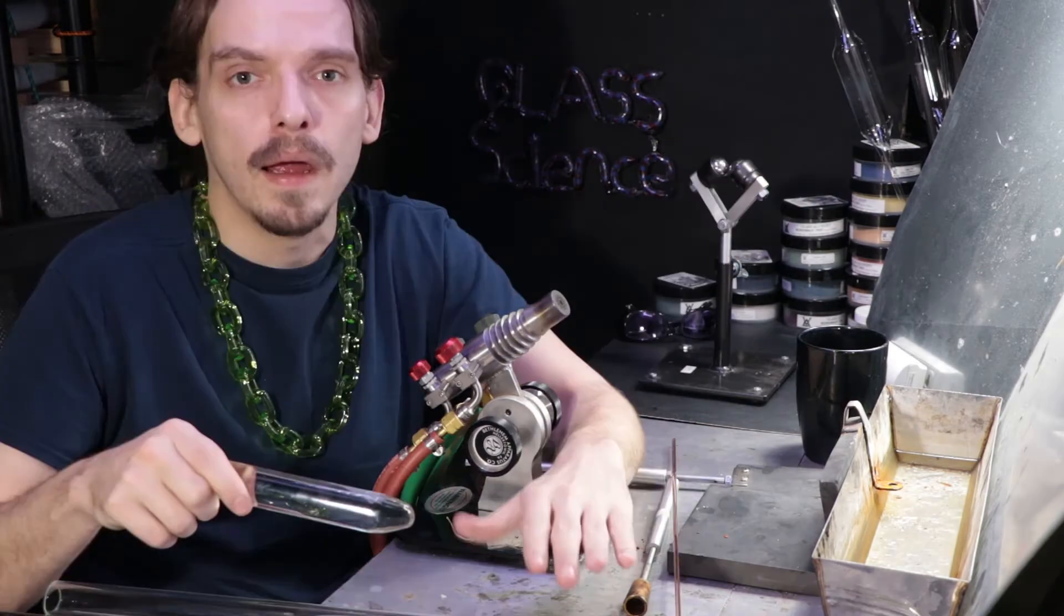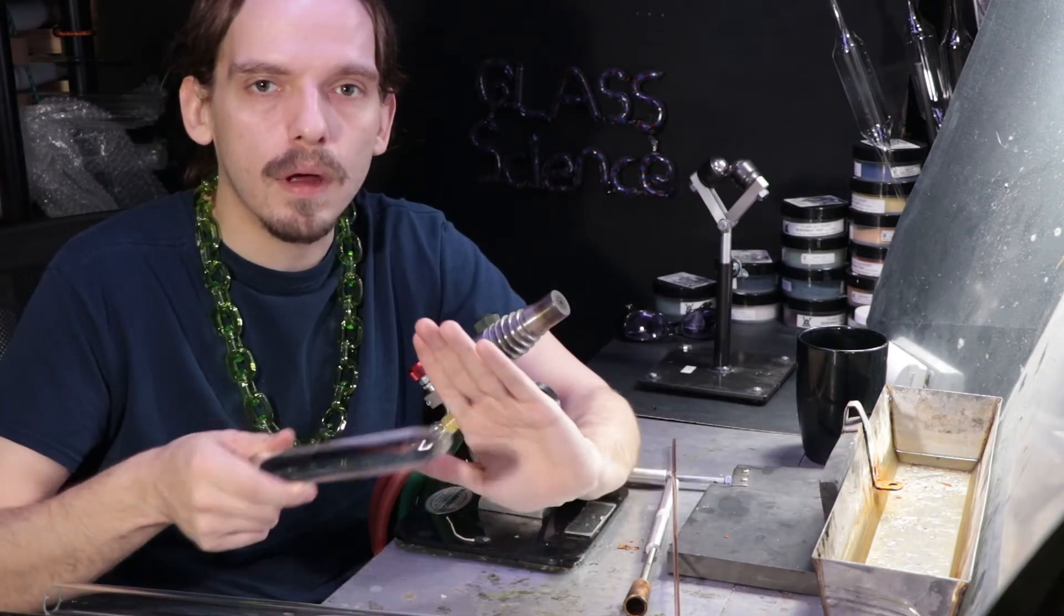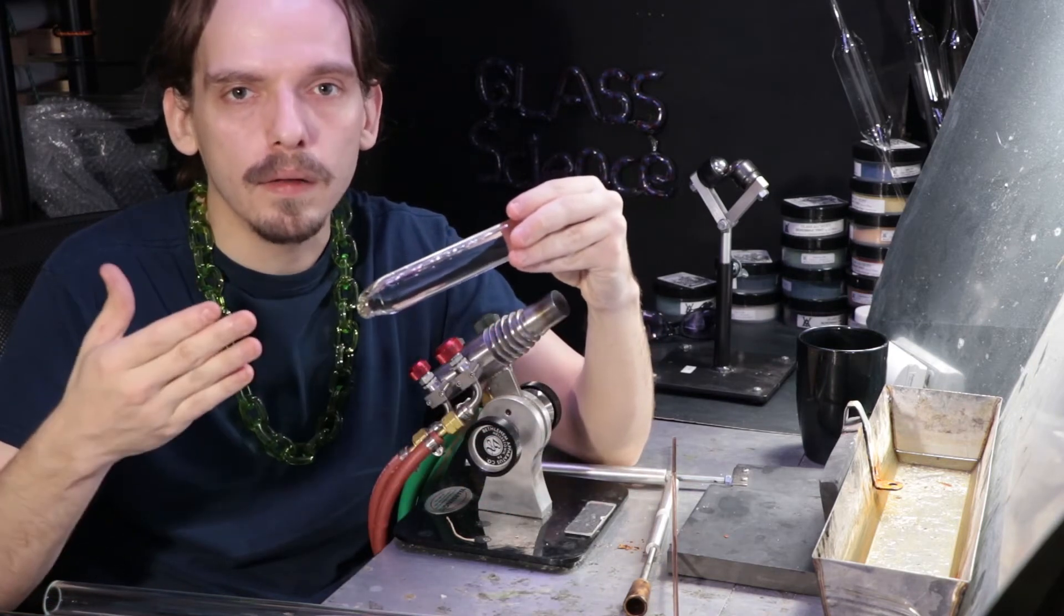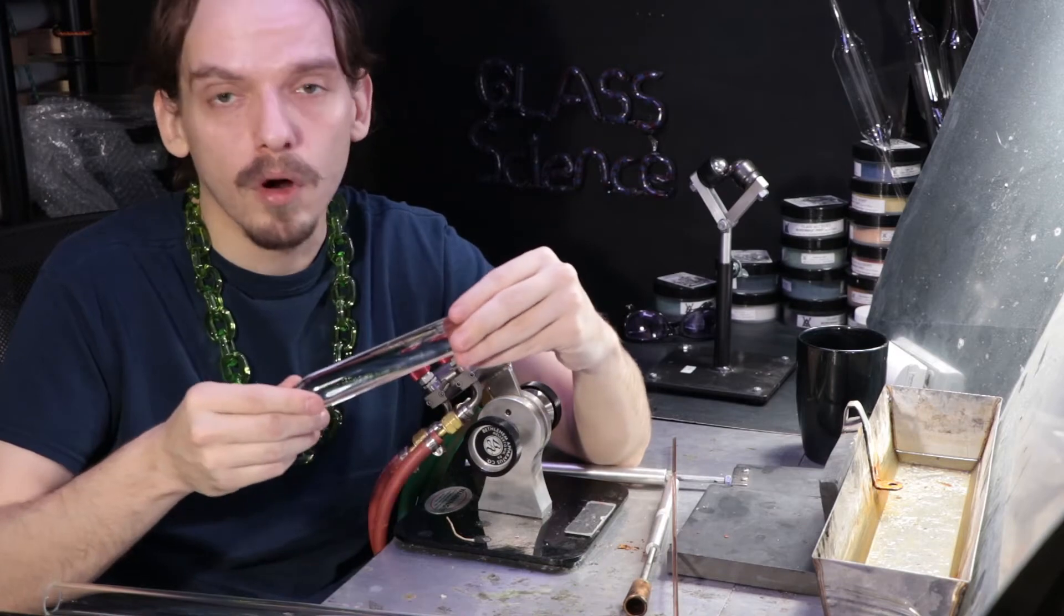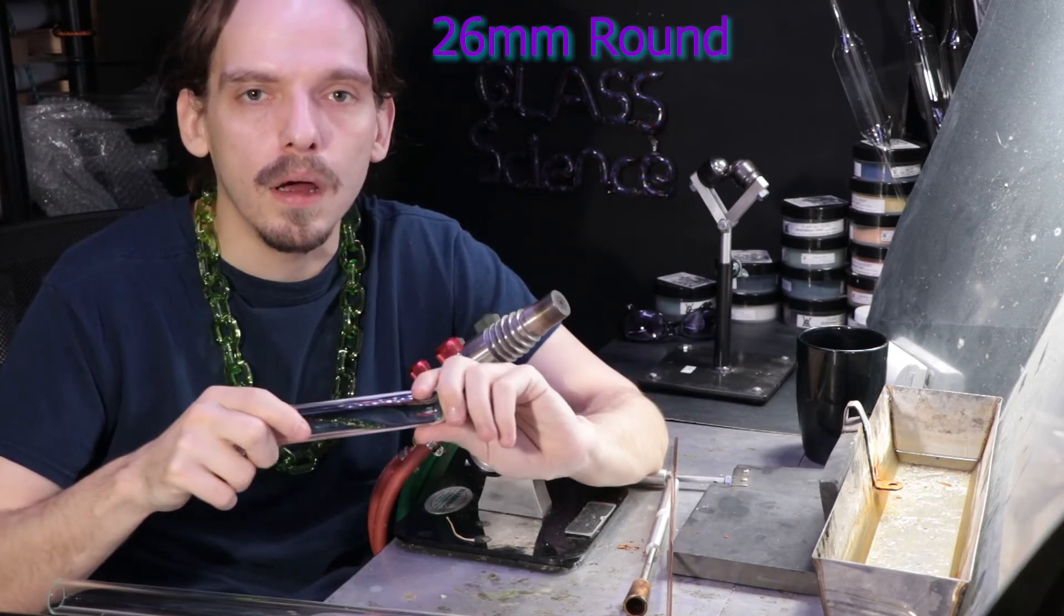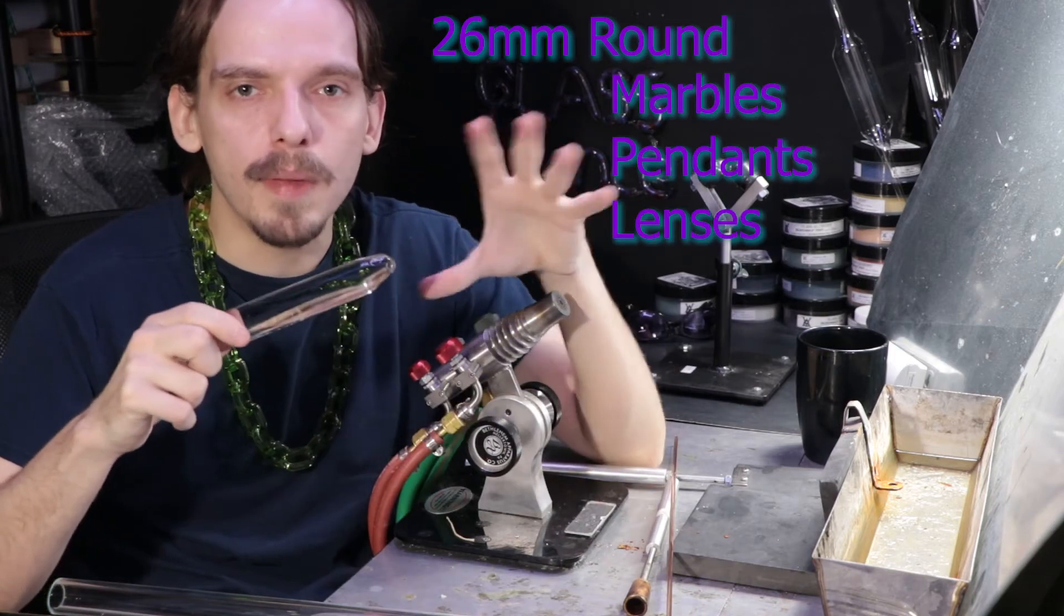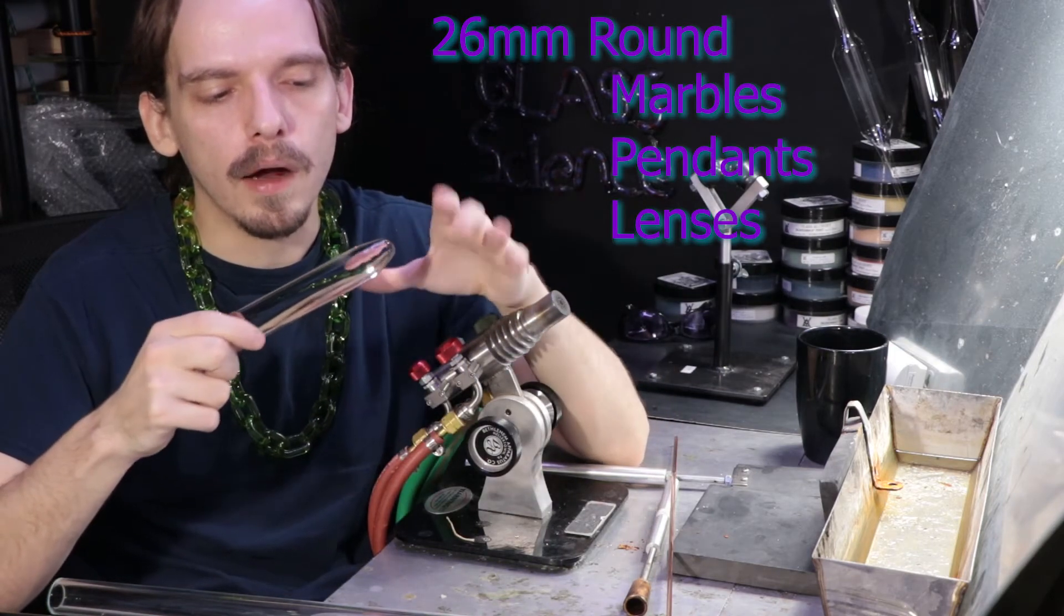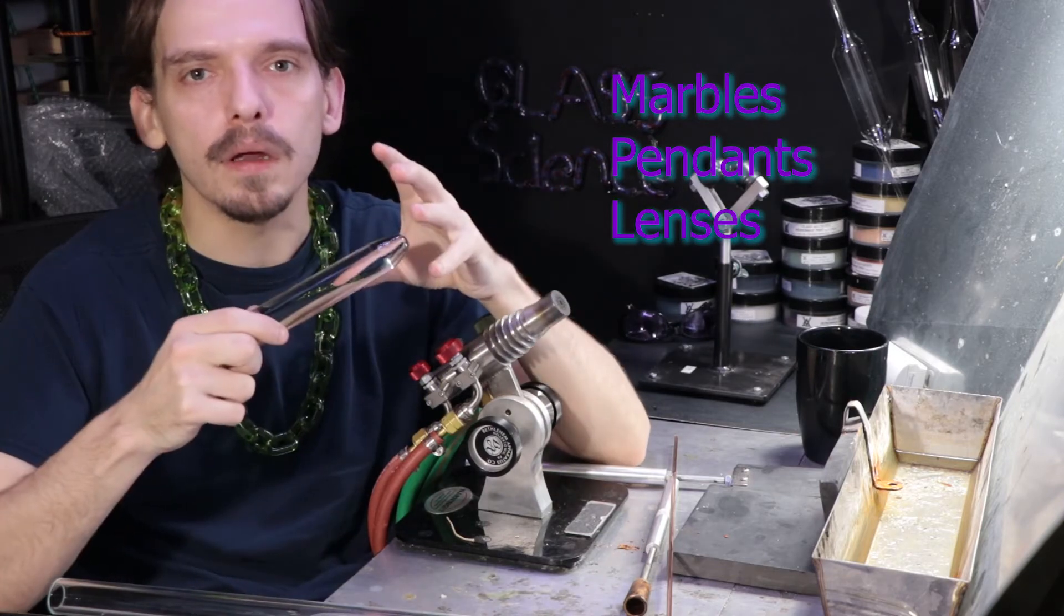And then for a lot of my projects that require a lot of solid glass - pendants, lenses, marbles - I'll get the 26 millimeter rod just because it takes less time to melt it back and it's a little bit cleaner because there's less area exposed to the atmosphere as you're melting it in than versus like a 15 millimeter or something.